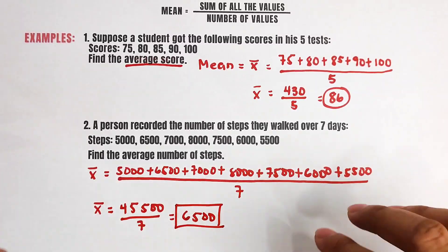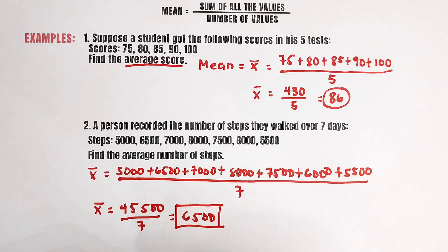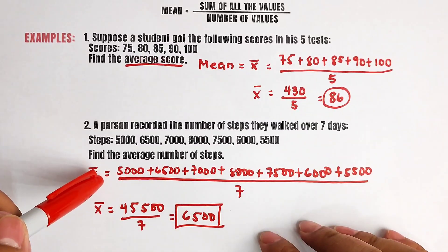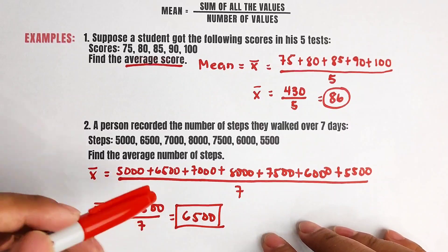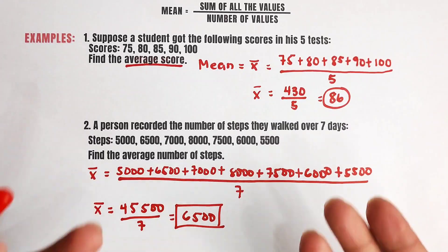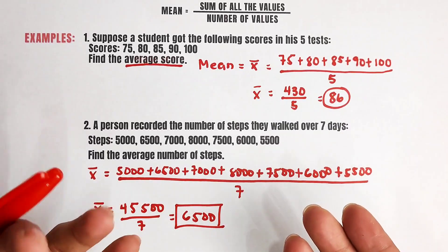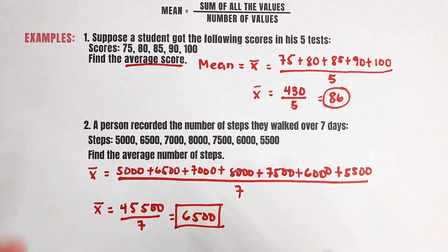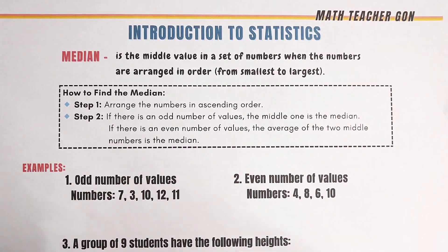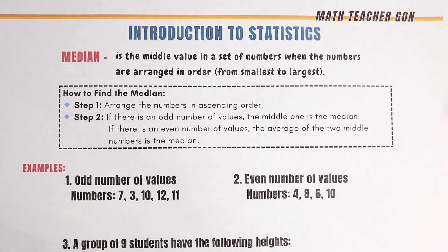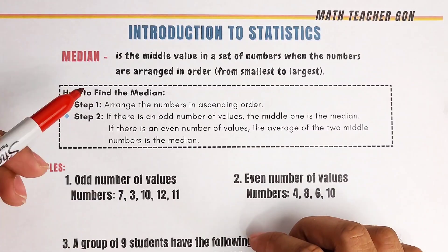So it simply means that the average number of steps made by a person over seven days is 6,500 steps. Now, in the next part of the video, we will talk about the median and the mode. After the mean, we have the median — let us define what a median is.